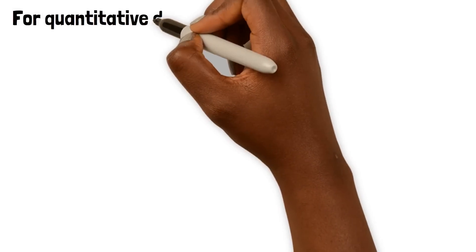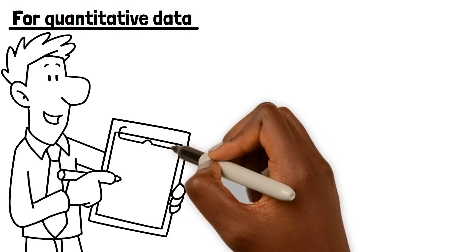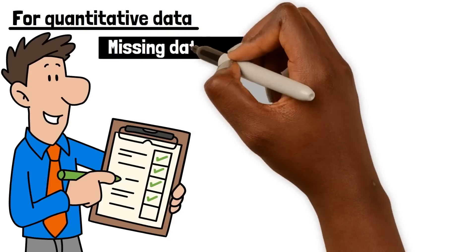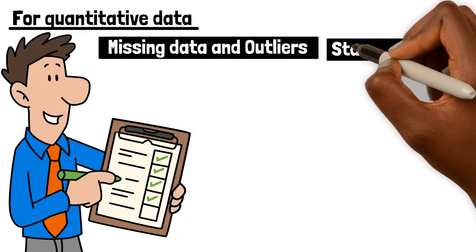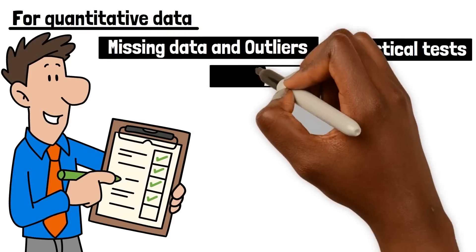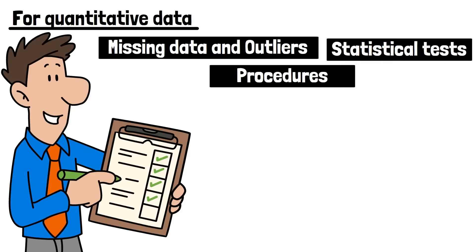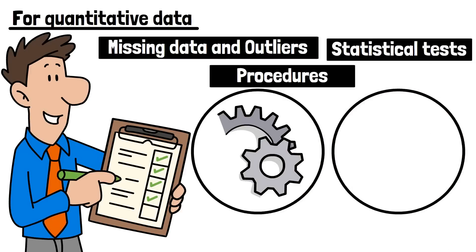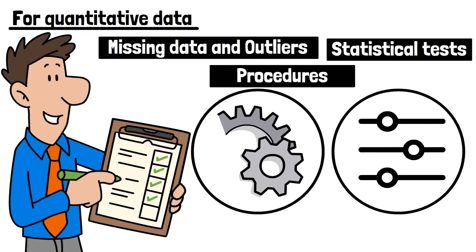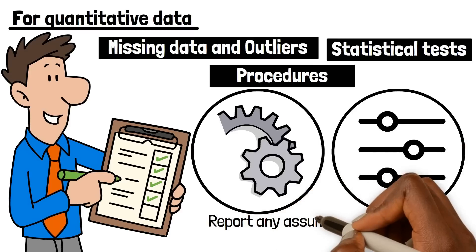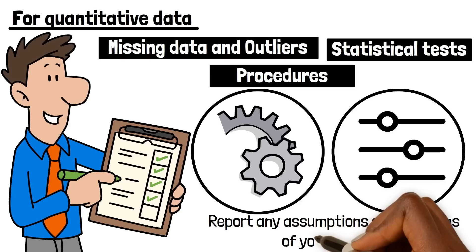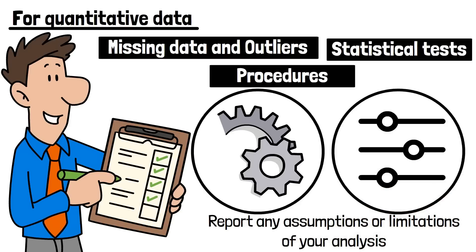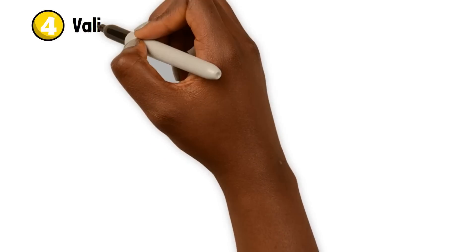For quantitative data, you'll need to explain how you prepared the data — for example, checking for missing data and outliers — and the statistical tests and procedures you will use to analyse the data. Be sure to provide enough detail so that another researcher can understand and replicate your analysis, including any software you will use and the specific parameters you will set. It is also a good idea to report any assumptions or limitations of your analysis, such as the sample size or the representativeness of the sample.